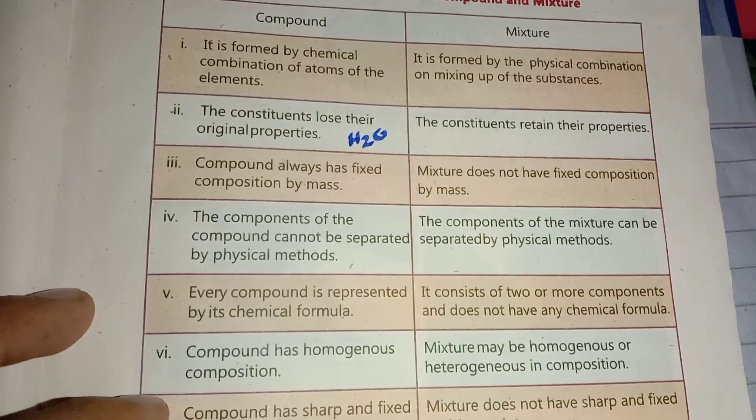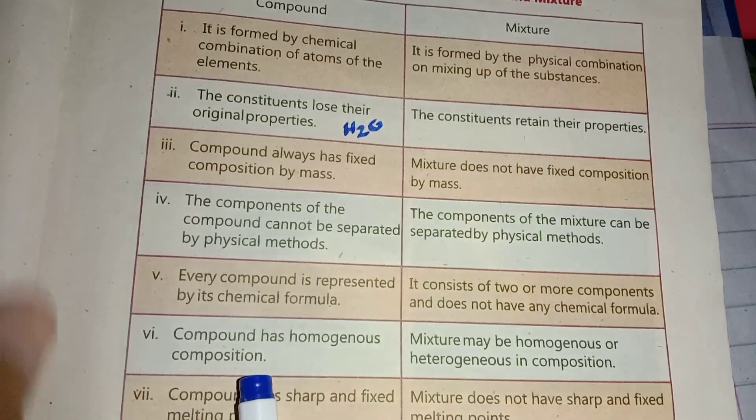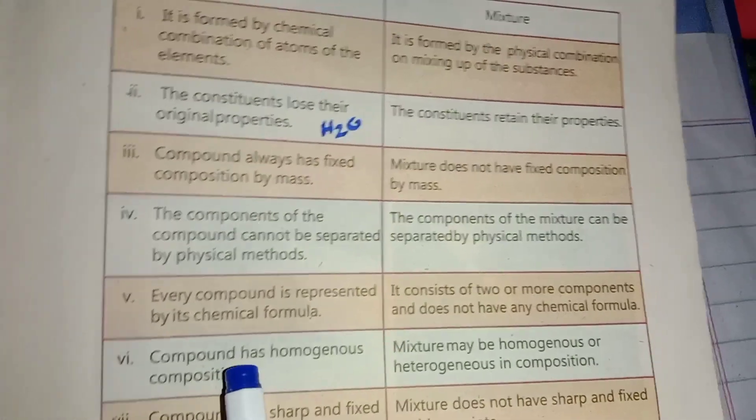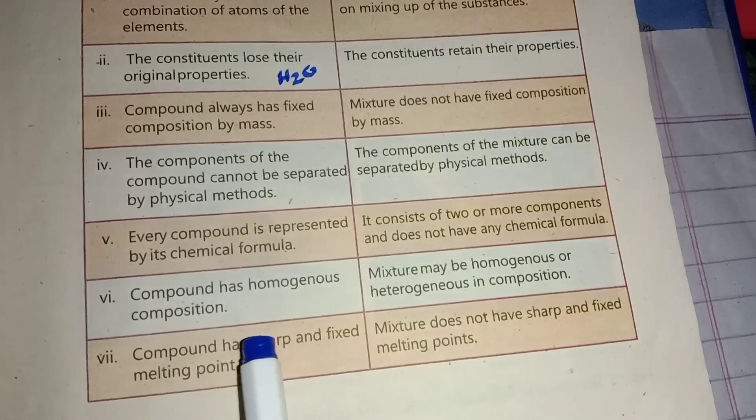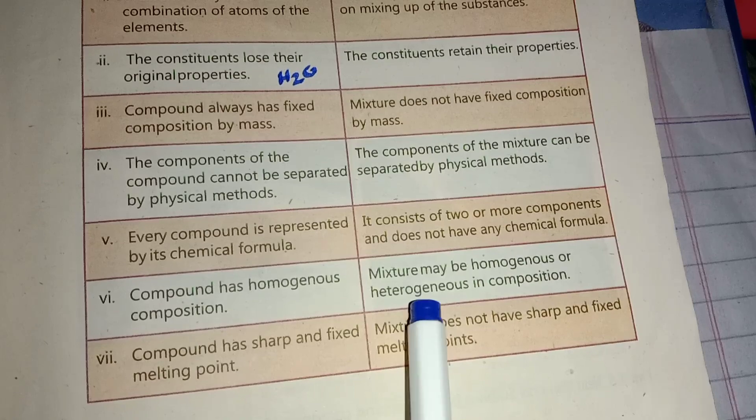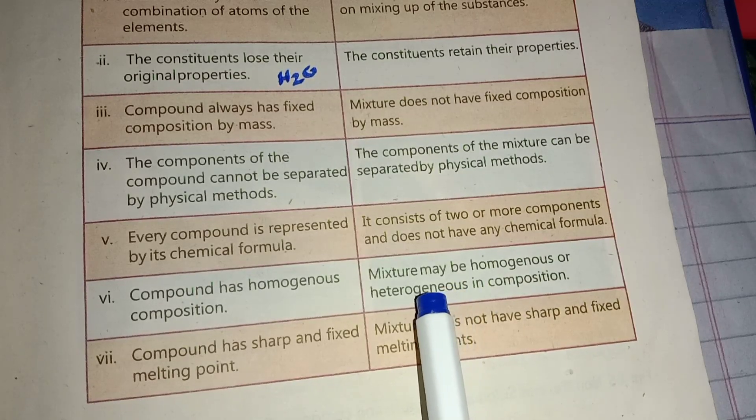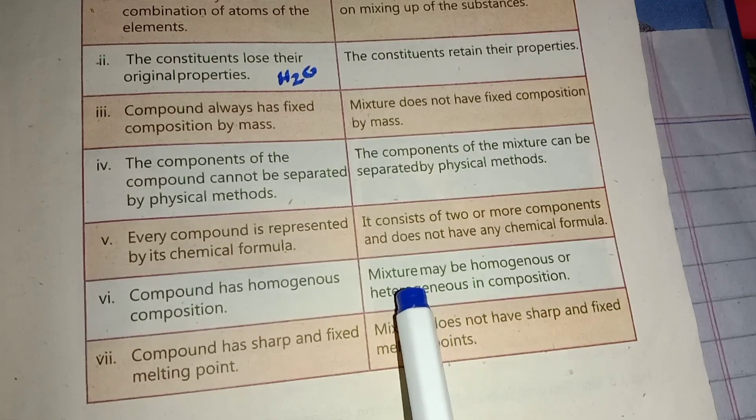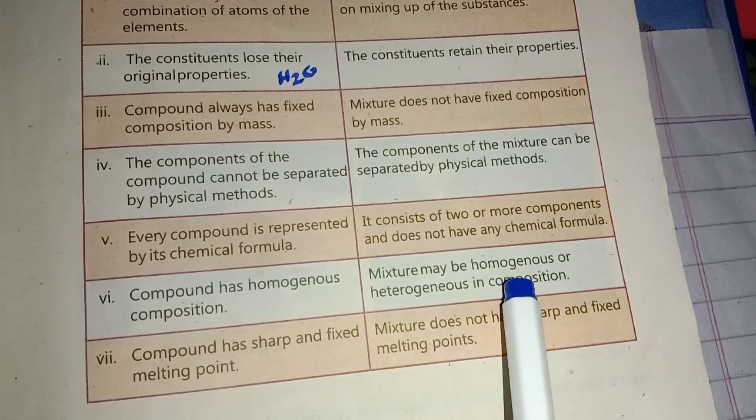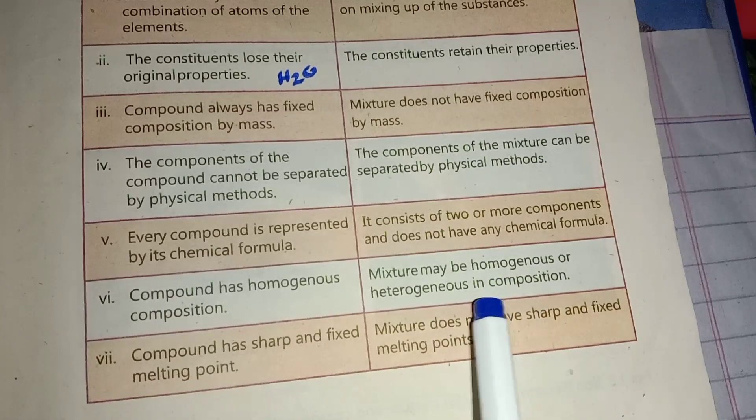Sixth difference: Compound has homogeneous composition - uniform composition throughout. Mixture may be homogeneous or heterogeneous in composition. Some mixtures are homogeneous, others are heterogeneous.